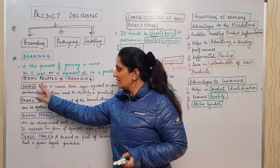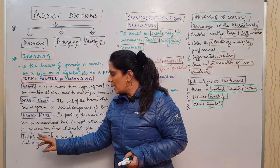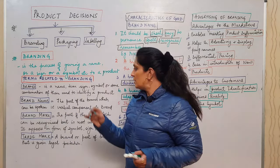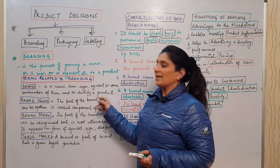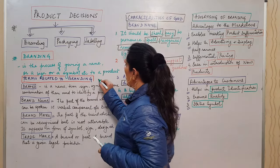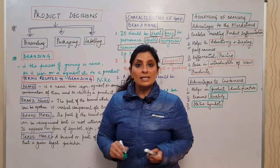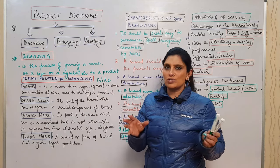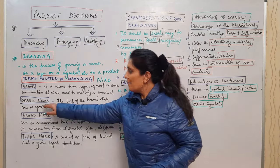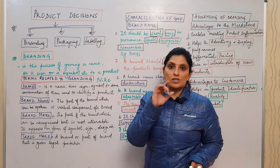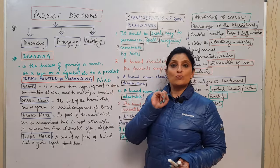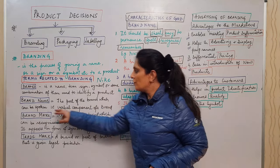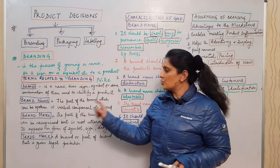There are some terms related to branding: brand, brand name, brand mark, and trademark. A brand is a name, term, sign, symbol, or some combination of them used to identify a particular product — for example, Nike is a brand that manufactures sports clothing, shoes, etc. Brand name is the part of the brand which can be spoken — the verbal component. Nike is spoken, so Nike is a brand name.